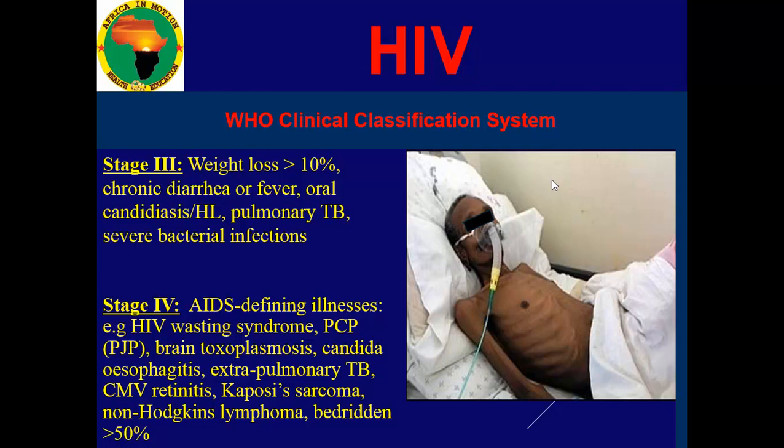All parts of the body can be affected, though we know the primary organ affected by TB is the lungs. The patient might have CMV retinitis — the retina gets infected with the virus called CMV, cytomegalovirus. Kaposi sarcoma. Non-Hodgkin lymphomas. The patient will be bedridden most of the time — more than 50% of the time they cannot move by themselves. This is stage 4, which is an advanced stage.